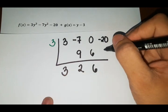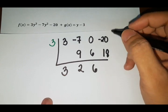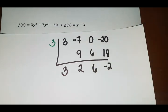6 times 3, that is 18. So negative 20 plus 18, that's negative 2. Okay. So let's write it now as polynomial.